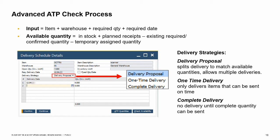One-time delivery only delivers the items that can be sent on time — with this option only five scanners would be delivered. A customer who needs the scanners right away for a specific event might choose this option. Complete delivery postpones the delivery so the entire quantity is delivered in full — this option might be chosen by a customer who wants to install all seven scanners at once and is willing to wait to ensure the full quantity arrives on the same date. You can reopen the delivery schedule details window from the context menu of a document item row.